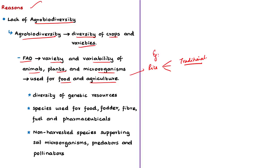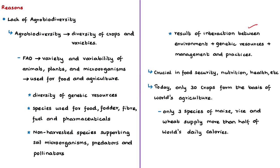Agrobiodiversity comprises the diversity of genetic resources such as species, varieties, and breeds used for food, fodder, fiber, fuel and pharmaceuticals. It also includes the diversity of non-harvested species that support production such as soil microorganisms, predators and pollinators, as well as species in the wider environment that support agroecosystems. Agrobiodiversity is the result of interaction between the environment, genetic resources and management systems and practices used by culturally diverse peoples — the result of both natural selection and human invention developed over the years.